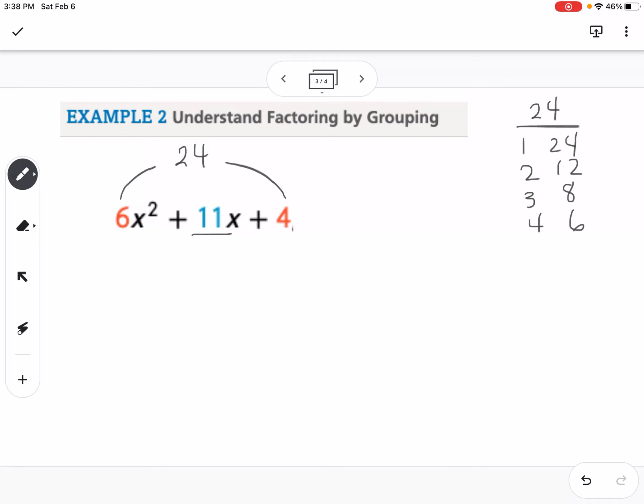So of those pairings, the 3 times 8 is going to give me 11. So now my next step is I'm going to write this, and instead of 11x, I'm going to break it up into 3x and 8x. So I'm going to say 6x squared plus 3x plus 8x plus 4. That's my next step. So then I am going to use parentheses and group the first two terms and the last two terms.